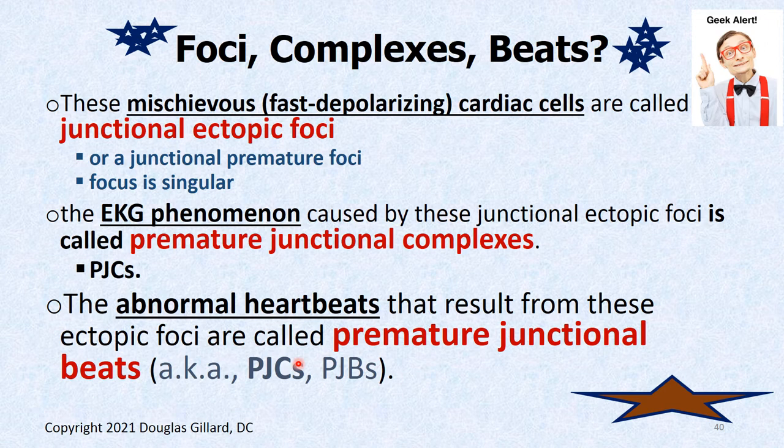Geek alert: the mischievous cardiac cells depolarizing are called ectopic foci — junctional ectopic foci. The EKG finding created by these junctional ectopic foci is called a premature junctional complex. The heartbeat caused by this errant signal is called a premature junctional beat — PJB — or sometimes PJC, premature junctional complex. Ectopic foci create premature complexes, which create premature beats.